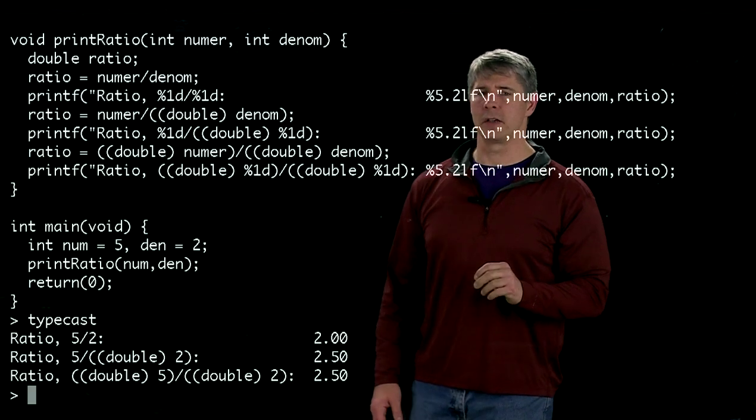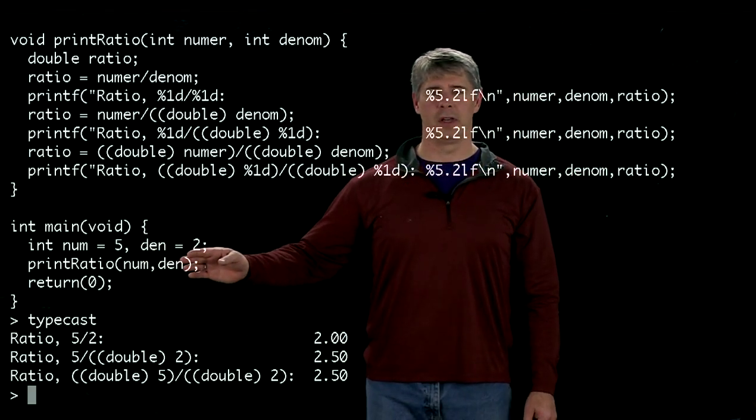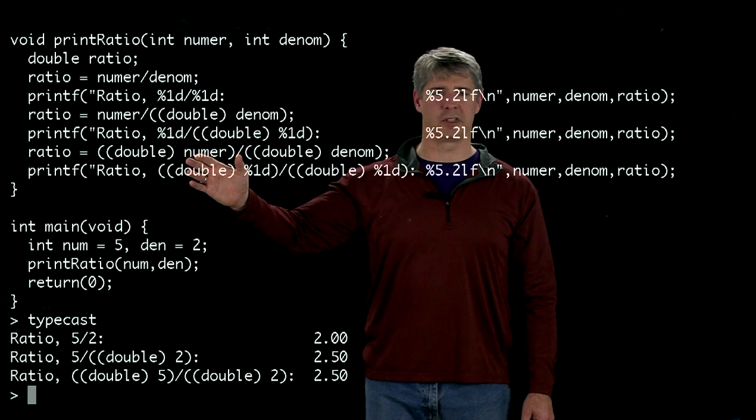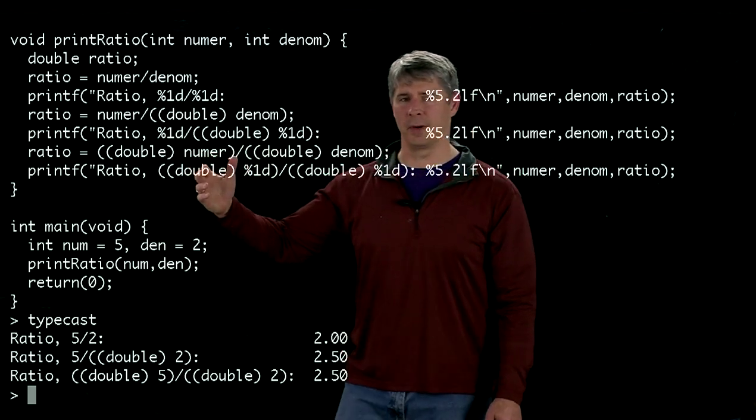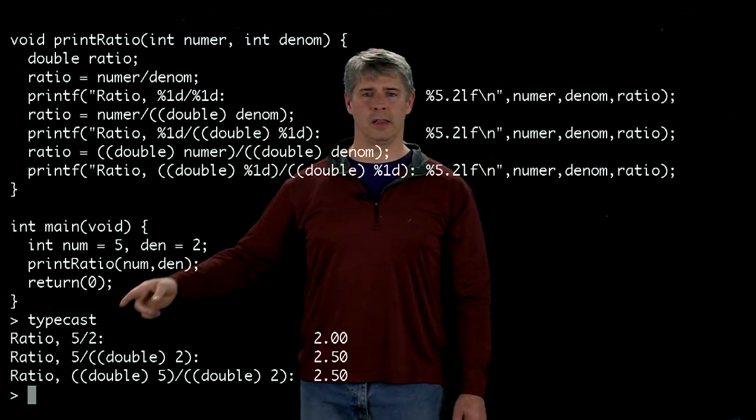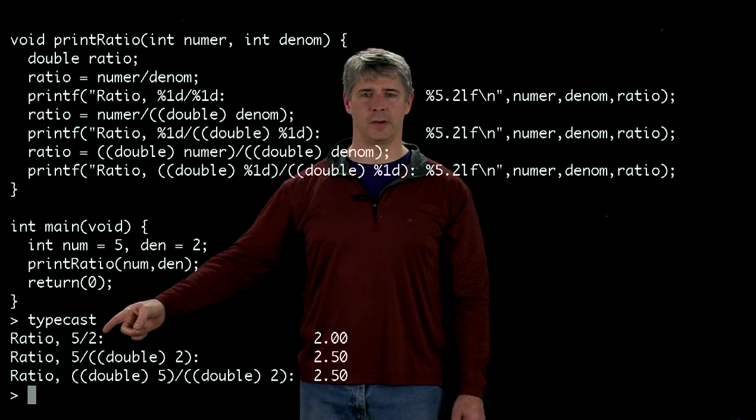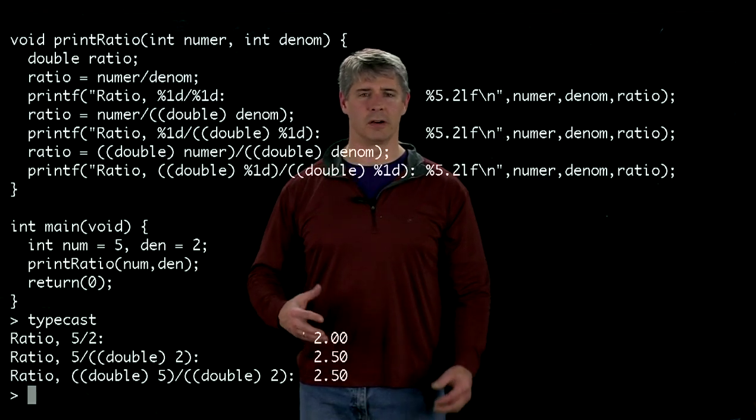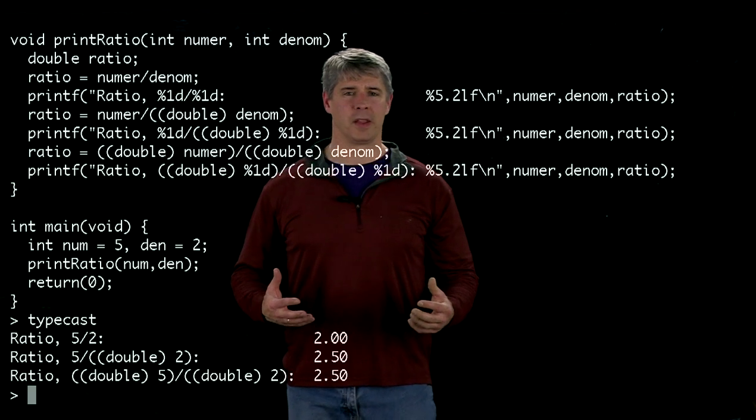We passed over five and two, and this function printRatio is just printing out five divided by two. In the first line here, you can see the ratio of five divided by two is 2.0. So how could that be?